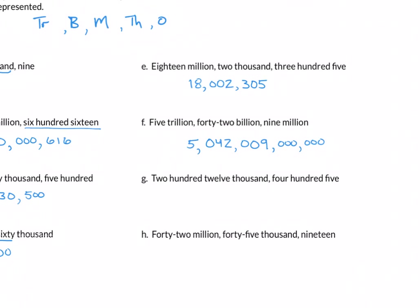Example g: two hundred twelve thousand, four hundred five. We work with 212 — that's 2-1-2, comma. Then four hundred five: four in the hundreds column, no 'ty' or 'teen' so zero in the middle, then five — giving 4-0-5. The result is 212,405.